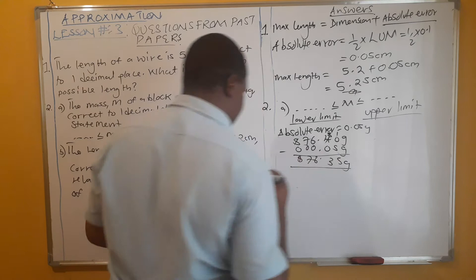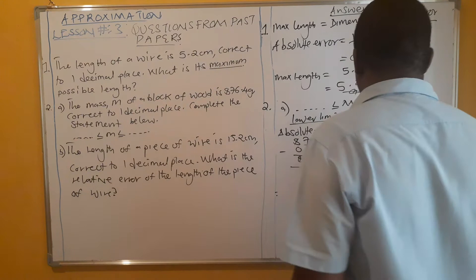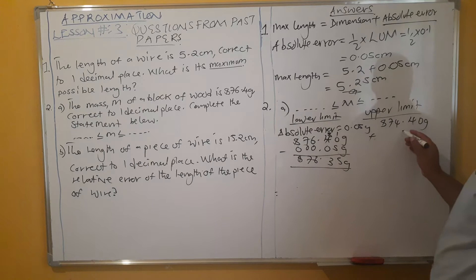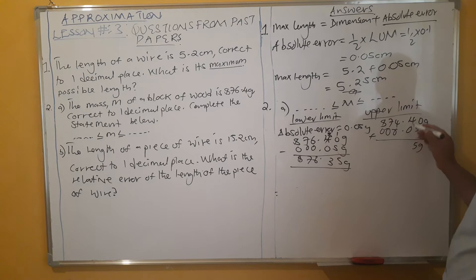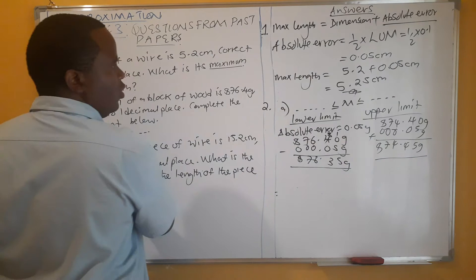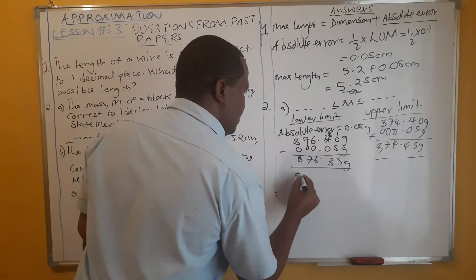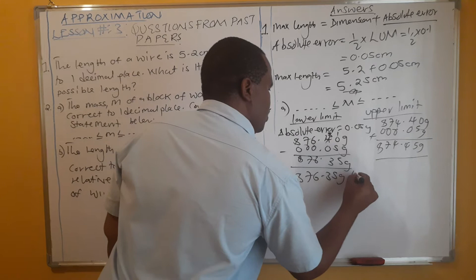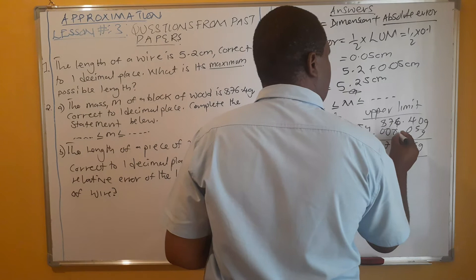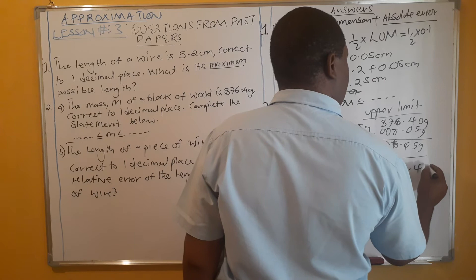For the upper limit, we do the same: dimension 876.4 grams plus 0.05 grams, giving us 876.45 grams. So the completed statement is: 876.35 grams ≤ m ≤ 876.45 grams.